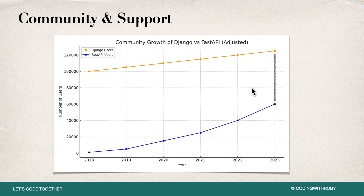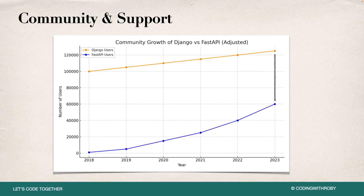The distance between Django and FastAPI is getting much closer, and I'm excited to see in two or three years who's actually going to be winning — will Django still be ahead, will they be even, or will FastAPI pull right behind it? It's exciting to see FastAPI picking up such momentum. GitHub total stars: Django has 77.3 thousand stars and FastAPI has 71.9 thousand stars. I remember when FastAPI had 50,000 stars and it felt recent — it's rapidly, rapidly increasing at such a fast speed, which is awesome for everybody involved.